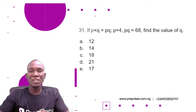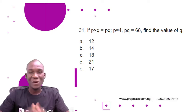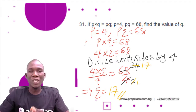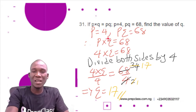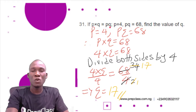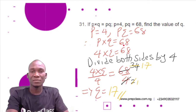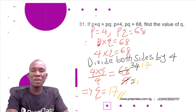We need to find the value of q, given that p multiplied by q equals pq, and we have p equals 4. From the equation, pq equals 68 means p multiplied by q equals 68. Since p equals 4, we have 4 multiplied by q equals 68.